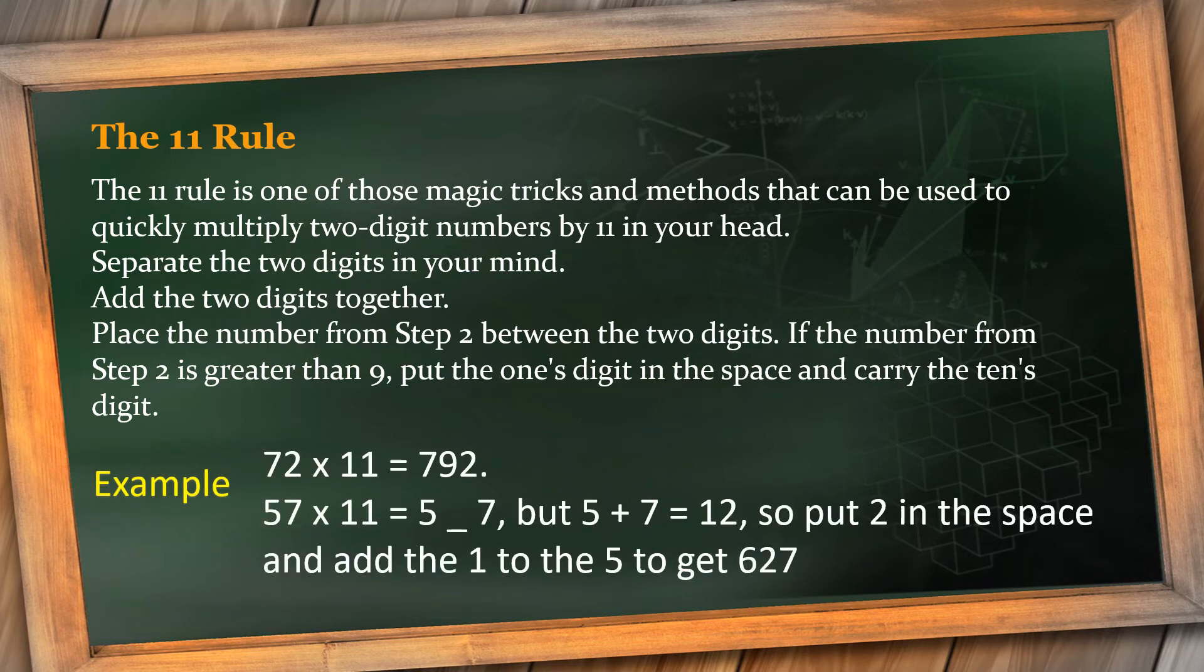For example, here we have to multiply 72 by 11. 7 will be in the first place, 2 will be in the ones place. 7 plus 2 is 9, so 9 in the middle place. The answer is 792. So easy, right? Coming to the second example, 57 multiplied by 11. 5 will be the first digit, 7 will be in the ones place. Now 5 plus 7 is 12. But can I write 12 together there? No. So instead of writing 12 together, I'll put 2 in that middle space and that 1 will be added to the number 5, which will make it a total of 6. Answer is 627. So easy, isn't it?